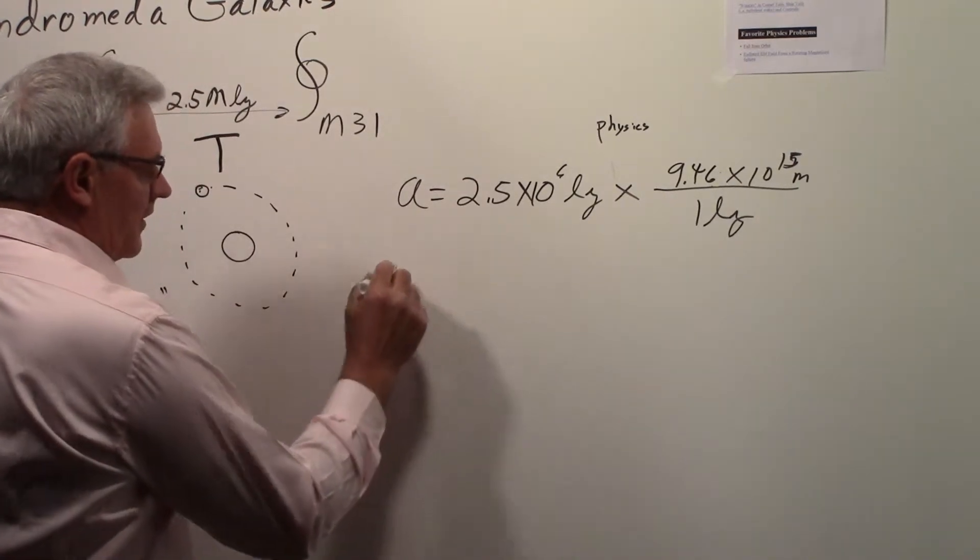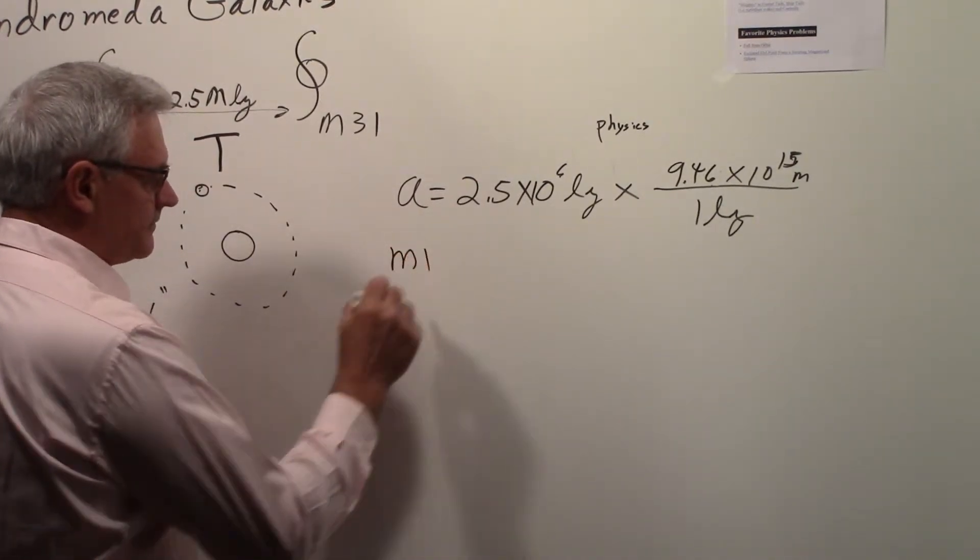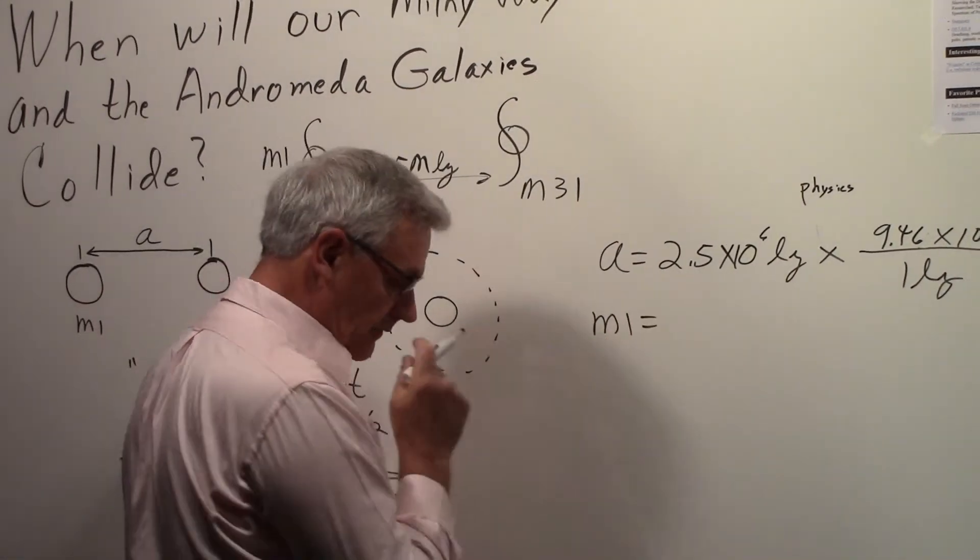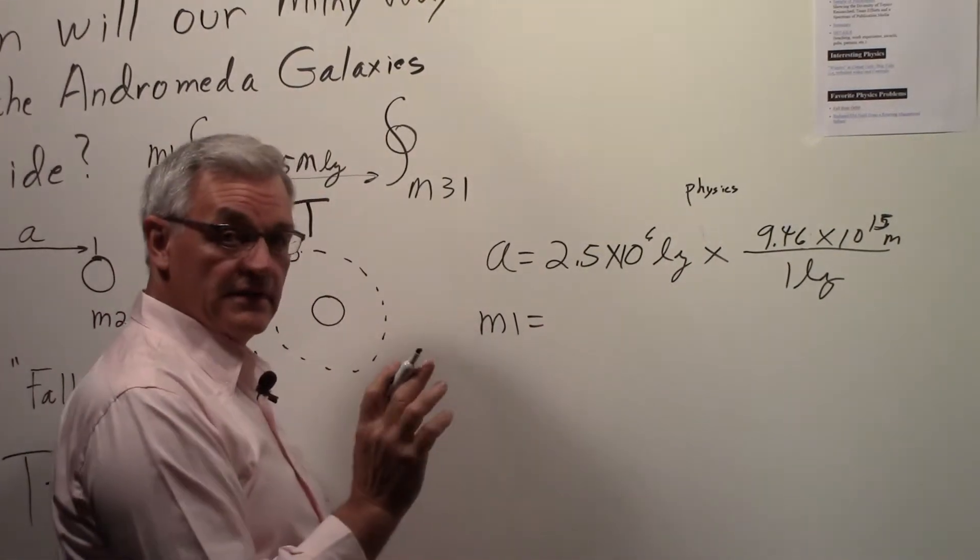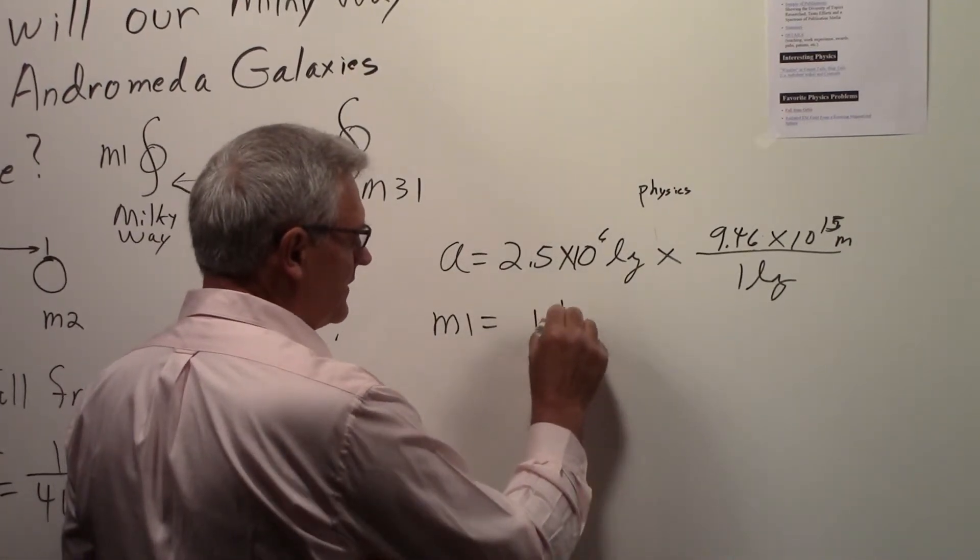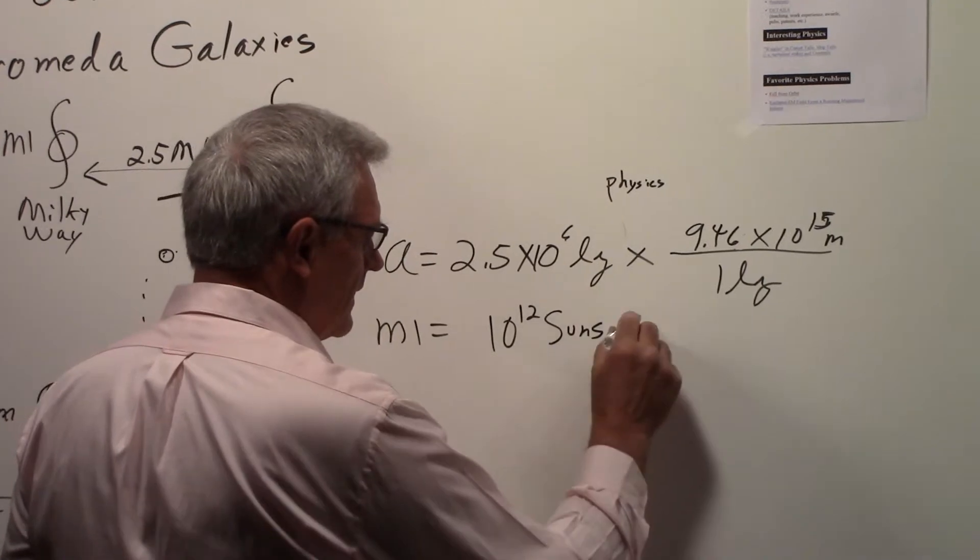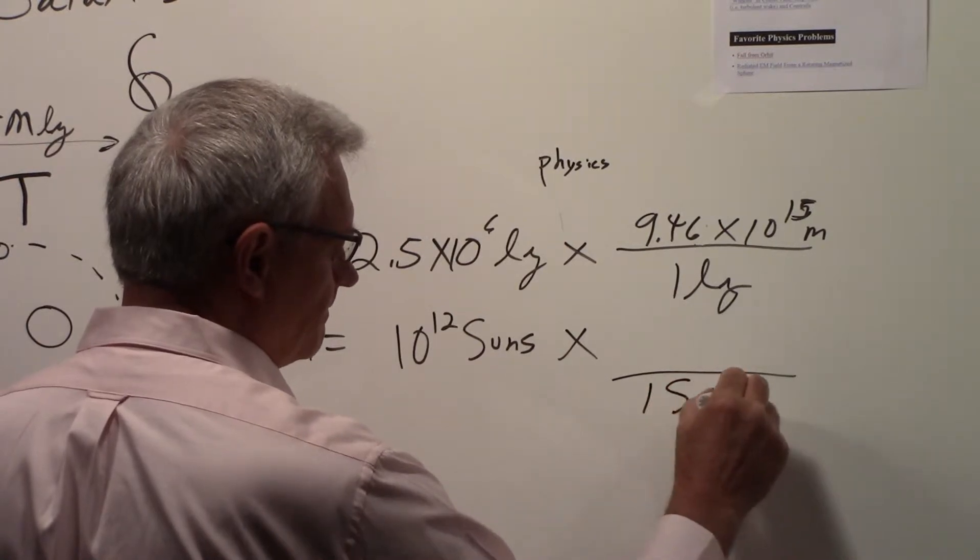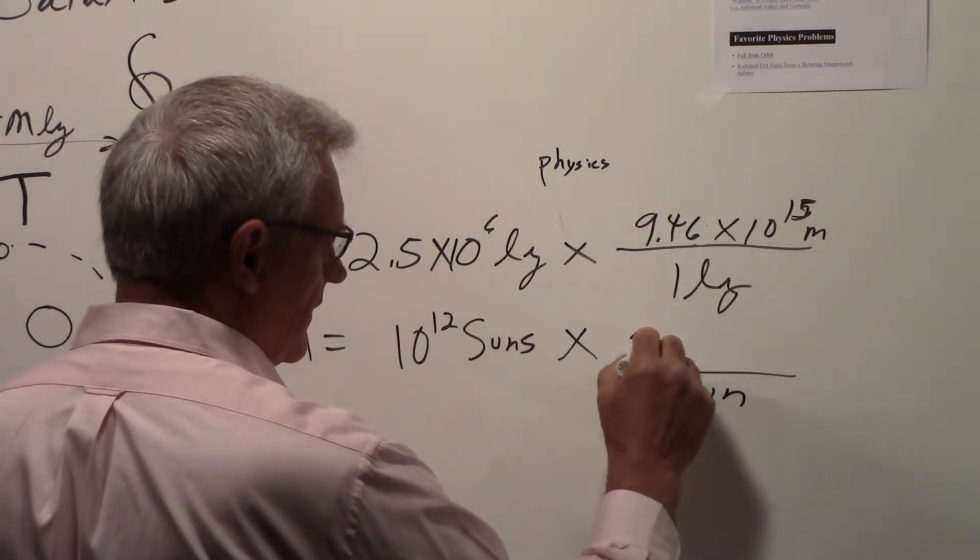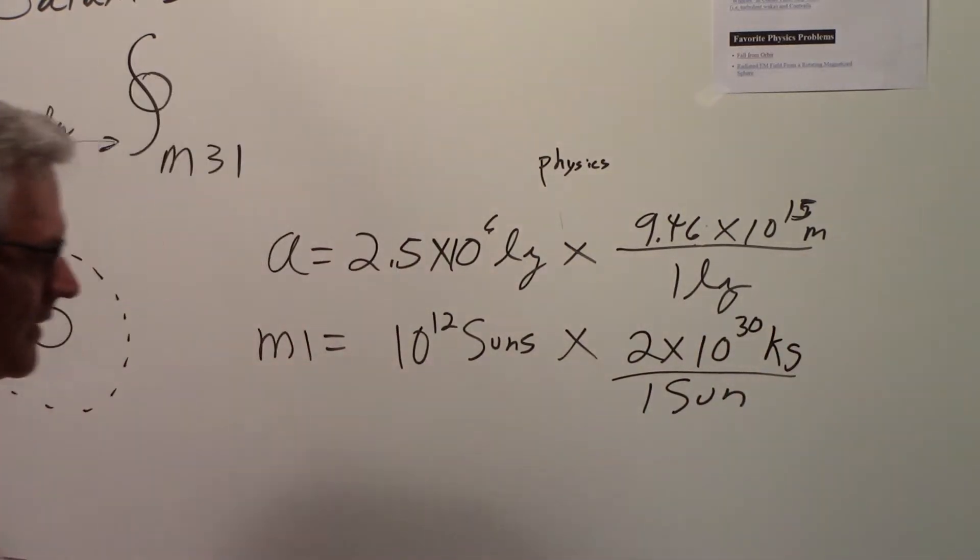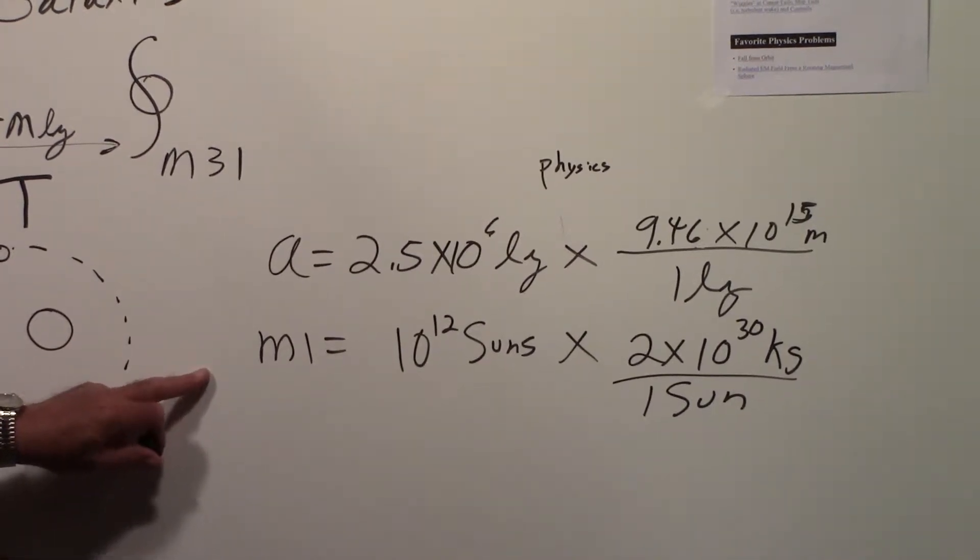The other thing that we need are the two masses. We'll call M1 the mass of the Milky Way. What's the mass of the Milky Way? The Milky Way is considered to consist of a mass equivalent to 10 to the 12th suns, and each one sun has a mass of roughly 2 times 10 to the 30th kilograms. So that is now the mass of the Milky Way galaxy in kilograms.